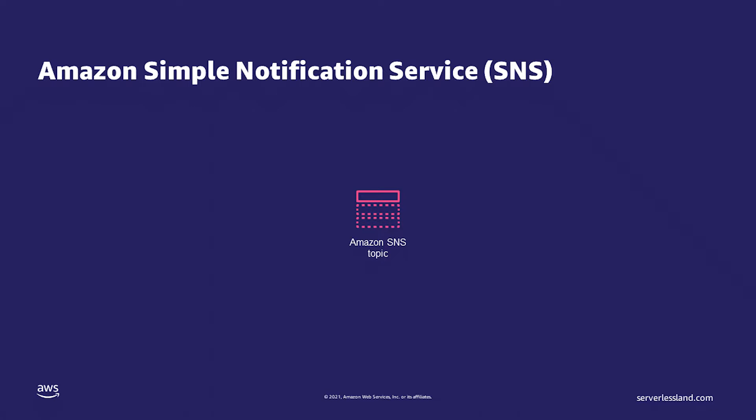SNS starts with a topic. A developer can create a topic to use as a point of communication for their application. Next, subscribers subscribe to the topic. These subscribers can be application-to-application with AWS Lambda, Amazon SQS, Amazon Kinesis Firehose, or third-party HTTP and HTTPS endpoints. These subscribers can also be application-to-person through email, SMS, or mobile push notifications. A single topic can have many different subscribers and types of subscribers, both internal or external, depending on the permissions set by the developer.